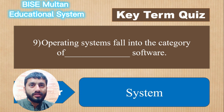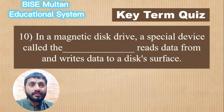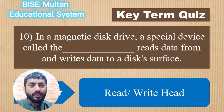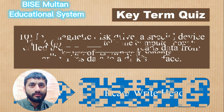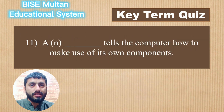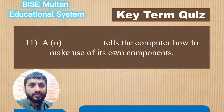Question 10. In a magnetic disk drive, a special device called the blank reads data from and writes data to a disk surface. The answer is Read/Write Head. Question 11. A blank tells the computer how to make use of its own components. The answer is Operating System.